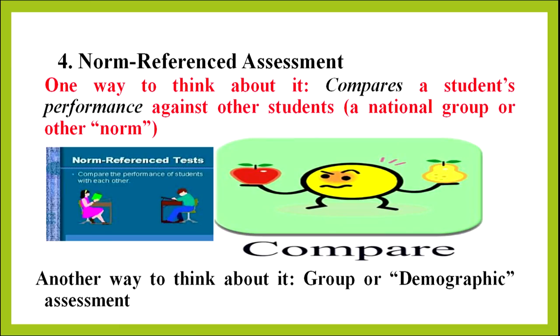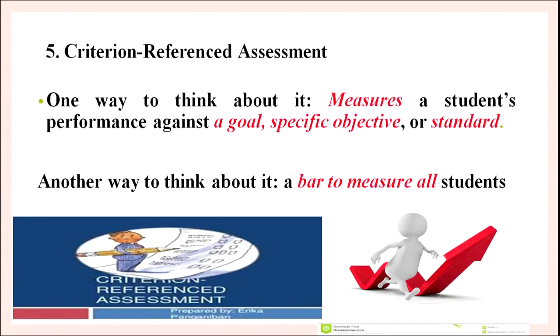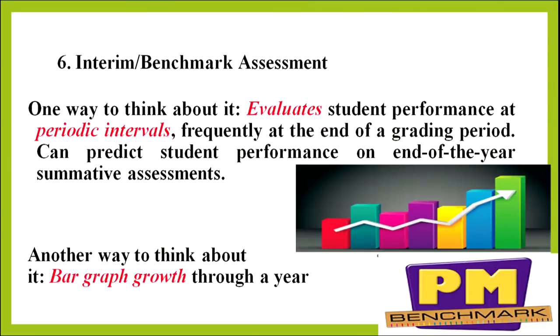Then comes norm referenced assessment. One way to think about it compares a student's performance against other students — it can be a national group or other norm. Another way to think about it: group or demographic assessment. Then next is criterion referenced assessment, which measures a student's performance against a goal, specific objective or standard — another way to think about it: a bar to measure all students. And last, interim or benchmark assessment evaluates student performance at periodic intervals, frequently at the end of a grading period, and can predict student performance on end-of-year or summative assessment — another way to think about it: a bar graph of growth through a year.